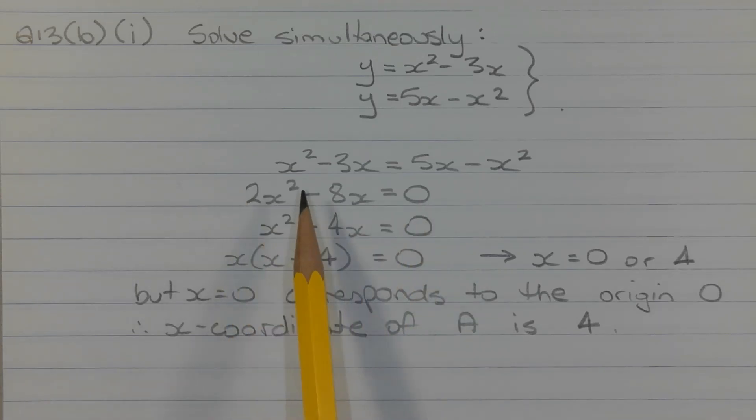Now since the coefficient of the x squared and x terms are even and 0 is also even, dividing all terms by 2 to simplify the equation even further, we get x squared minus 4x equals 0. Factorizing the left-hand side, we get x times x minus 4 in brackets equals 0. And the solution to this equation is x equals 0 or x equals 4.